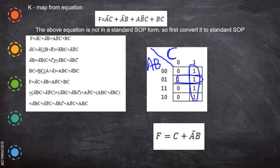In the full equation, substitute each expanded term. If the same term occurs two or three times, write it only once — eliminate duplicate terms. After expansion and elimination, we have five terms: A-bar B C, A-bar B-bar C, A-bar B C-bar, A B-bar C, and A B C.